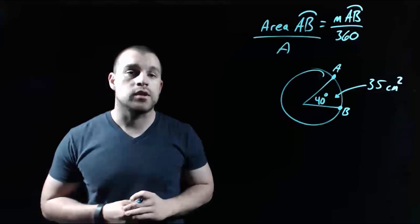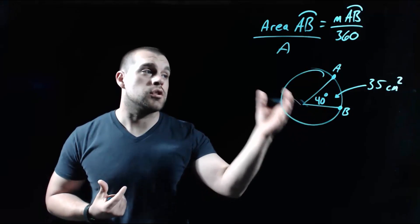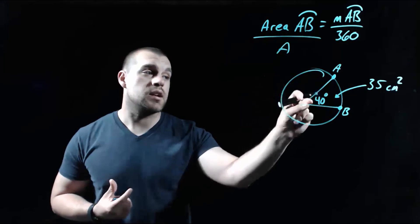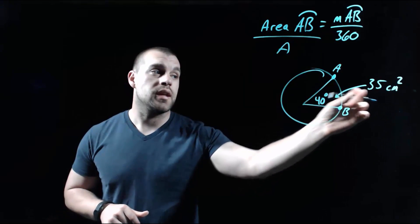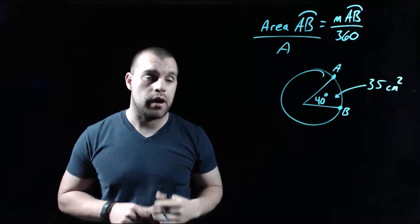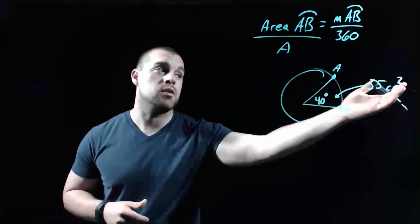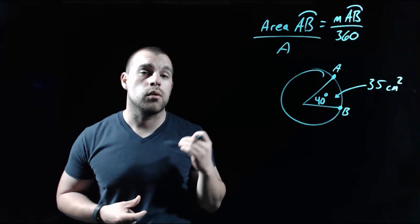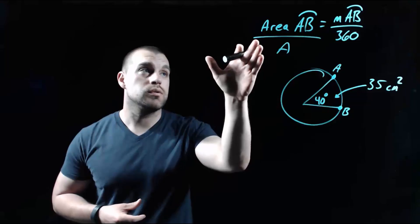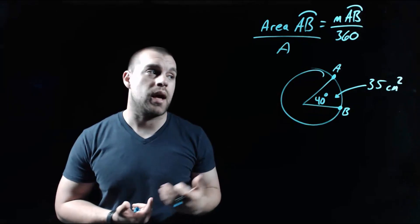Now we're going to use that formula that we just wrote down. So let's say we're given this picture. We know that the central angle in our picture is a 40-degree angle. We also know that the area of the sector that that 40-degree angle cuts is 35 centimeters squared, and what I want to know is I want to know the area of the entire circle. So we're going to use this formula and plug in everything that we have.